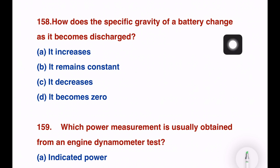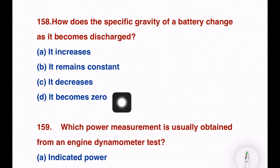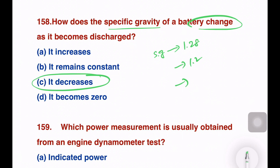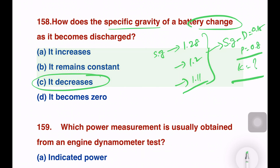Next question. How does the specific gravity of a battery change as it becomes discharged? Options: it increases, remains constant, decreases, or becomes zero. The right answer is it decreases. When fully charged, specific gravity is about 1.28; at full discharge, it drops to about 1.11. For reference, diesel has a specific gravity of about 0.85 and petrol about 0.8.